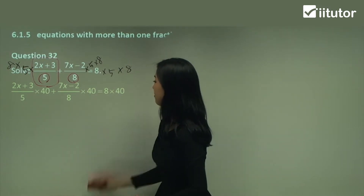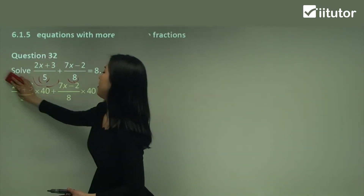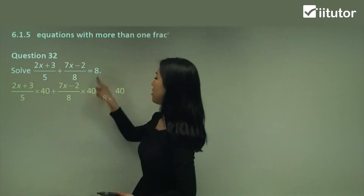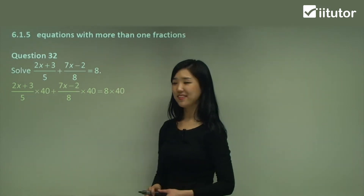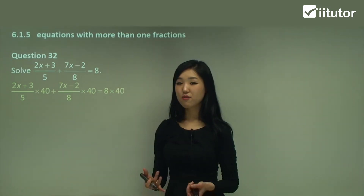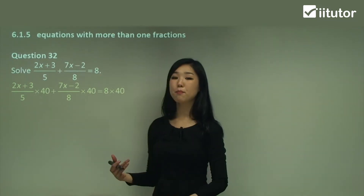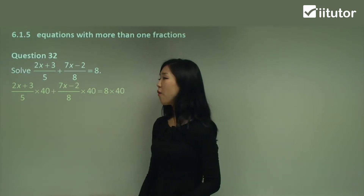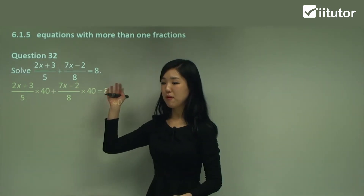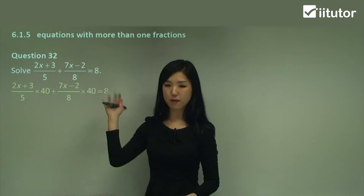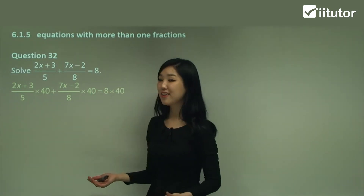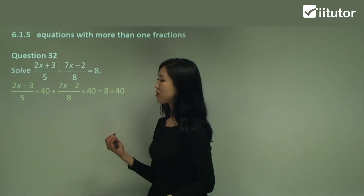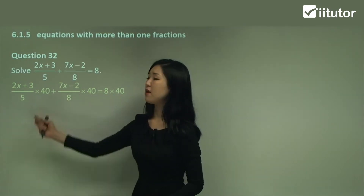So basically I'm multiplying everything by 40. Let me rub this all out so you can see more clearly. So multiply this by 40, this by 40, this by 40. And what is 40? 40 is the lowest common multiple of 5 and 8. So you can multiply by 5 first and then by 8, that's fine. Or you can just quickly think about the lowest common multiple — the LCM of 5 and 8 is 40, so multiply everything by 40.